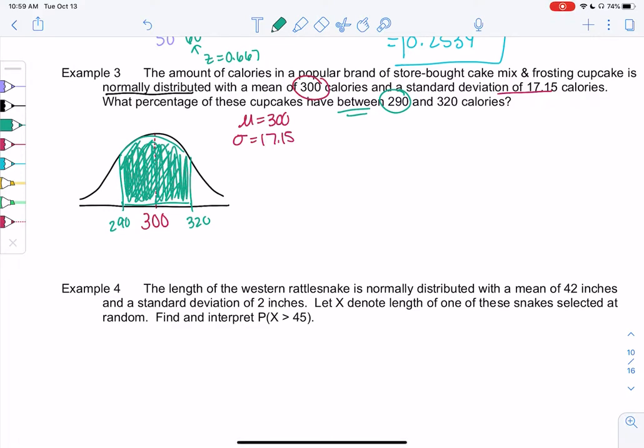So we can use normal CDF to find z-scores but first we need the z-score. Let's go ahead and find z-score. Looks like we have two z-scores, one for each.